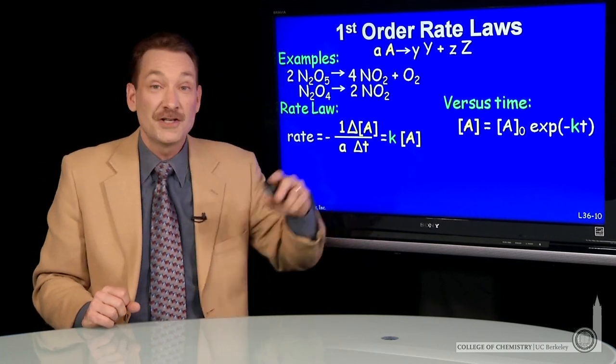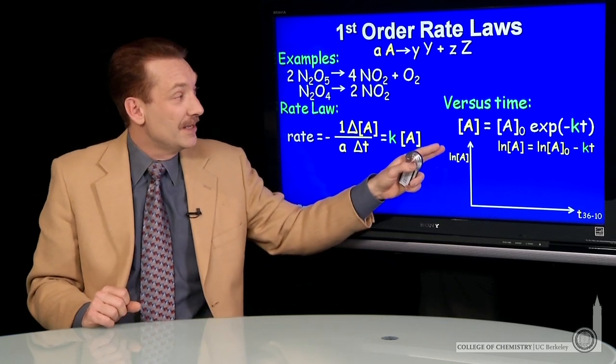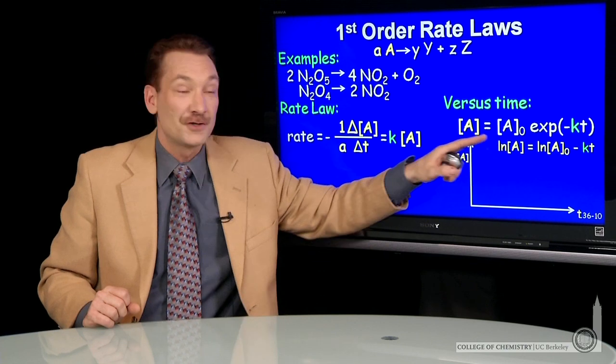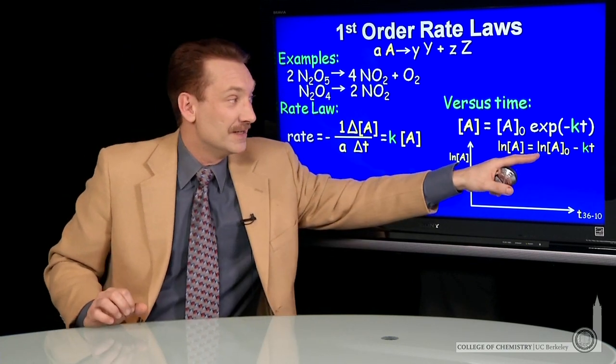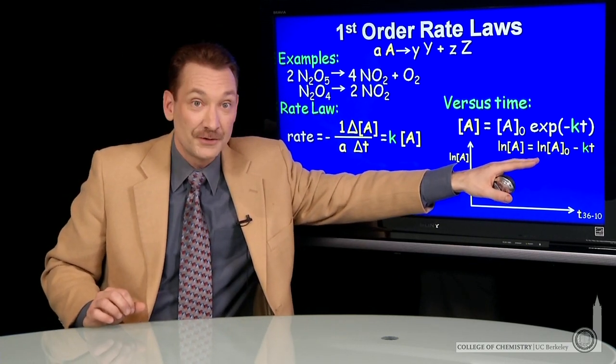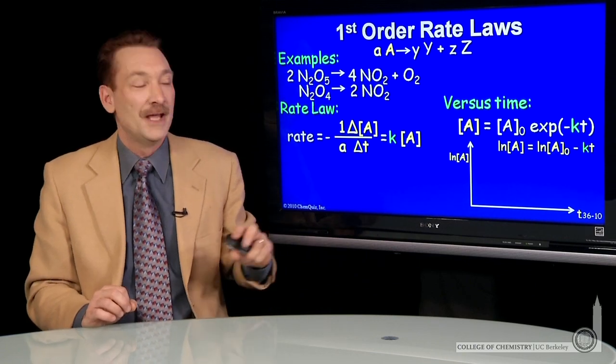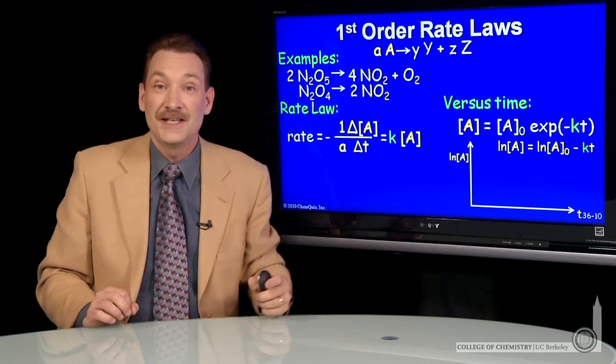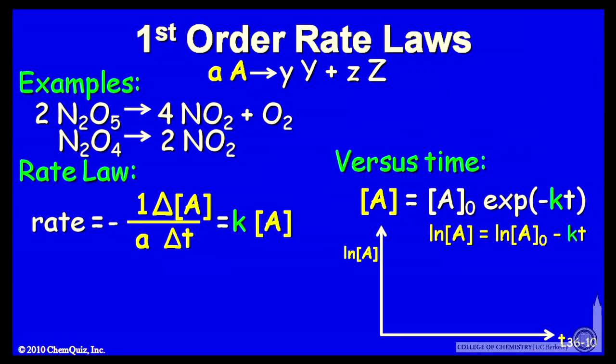And that's where this equation versus time helps. Because if you take the natural log of this expression, you get the natural log of the A concentration is the natural log of the initial concentration minus kT. And that's a linear expression in the natural log of A versus T. So if you measure concentrations, take their natural log, and plot them versus time, you get a straight line.